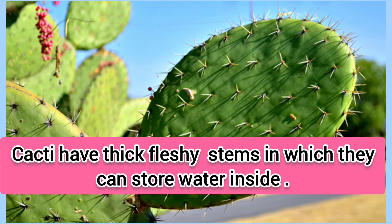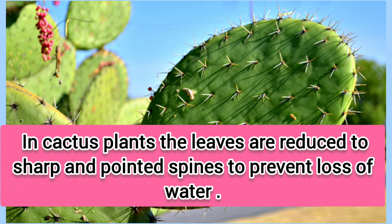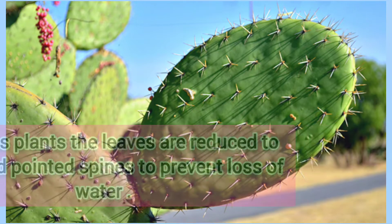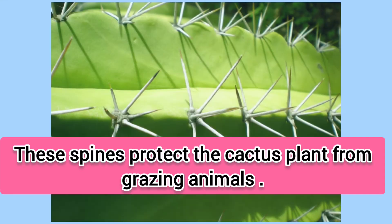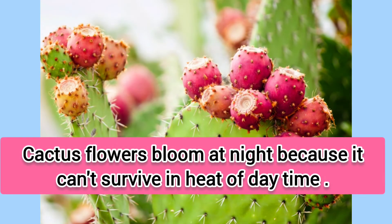Cacti have thick, fleshy stems in which they can store water. A desert plant cannot afford to lose water. Thus, in cactus plants, the leaves are reduced to sharp and pointed spines to prevent loss of water. These spines also protect the plants from grazing animals. Most cactus flowers bloom at night, as flowers cannot survive in the heat of the daytime.